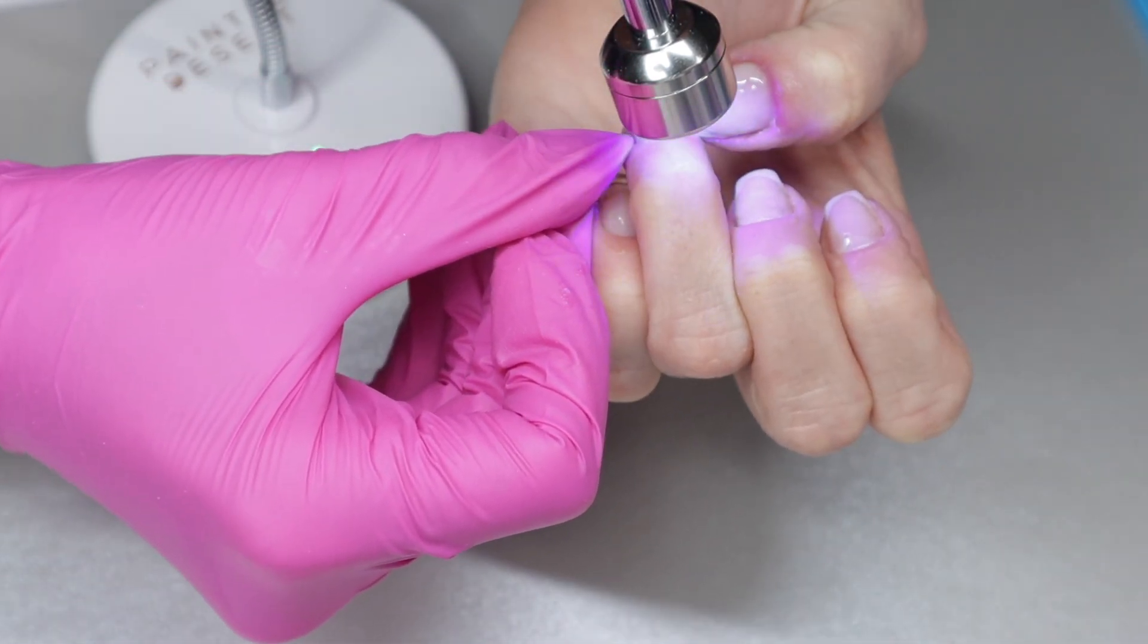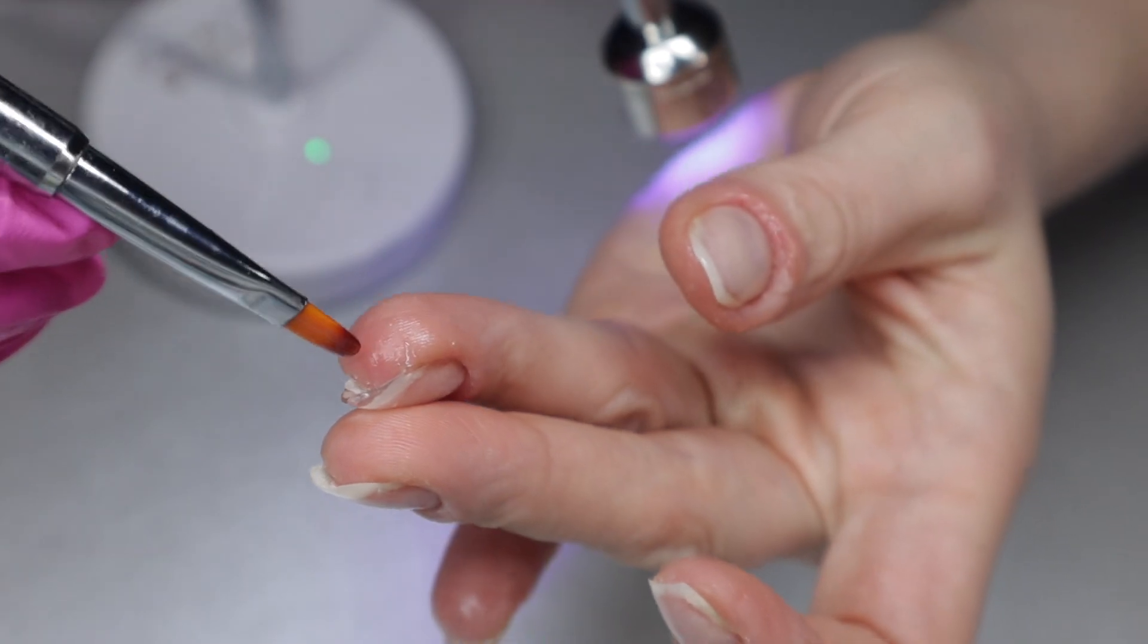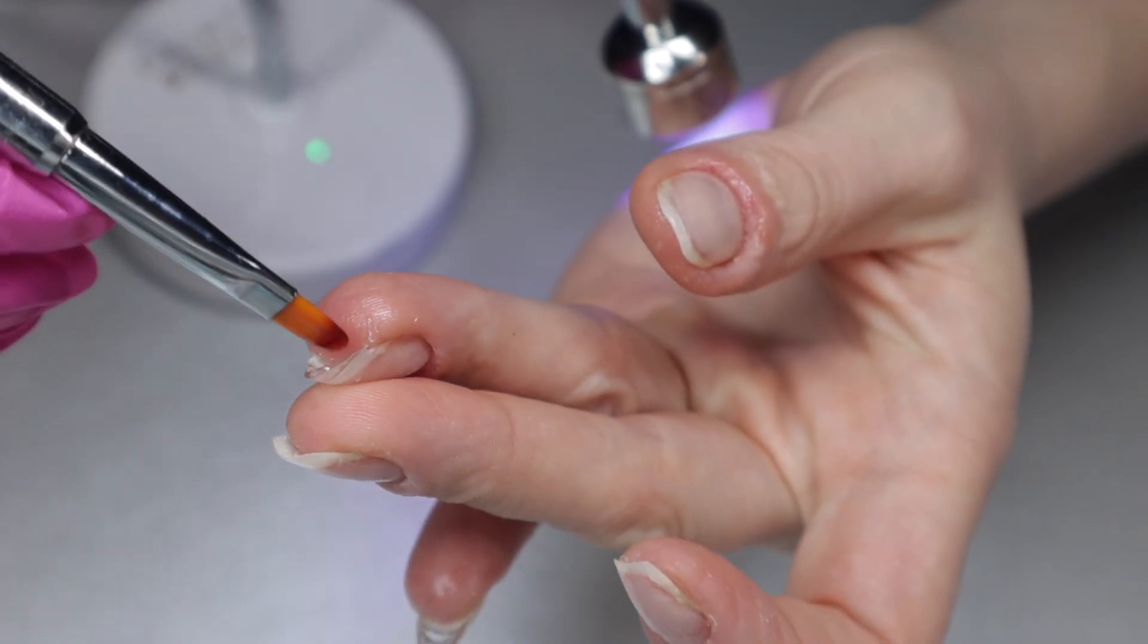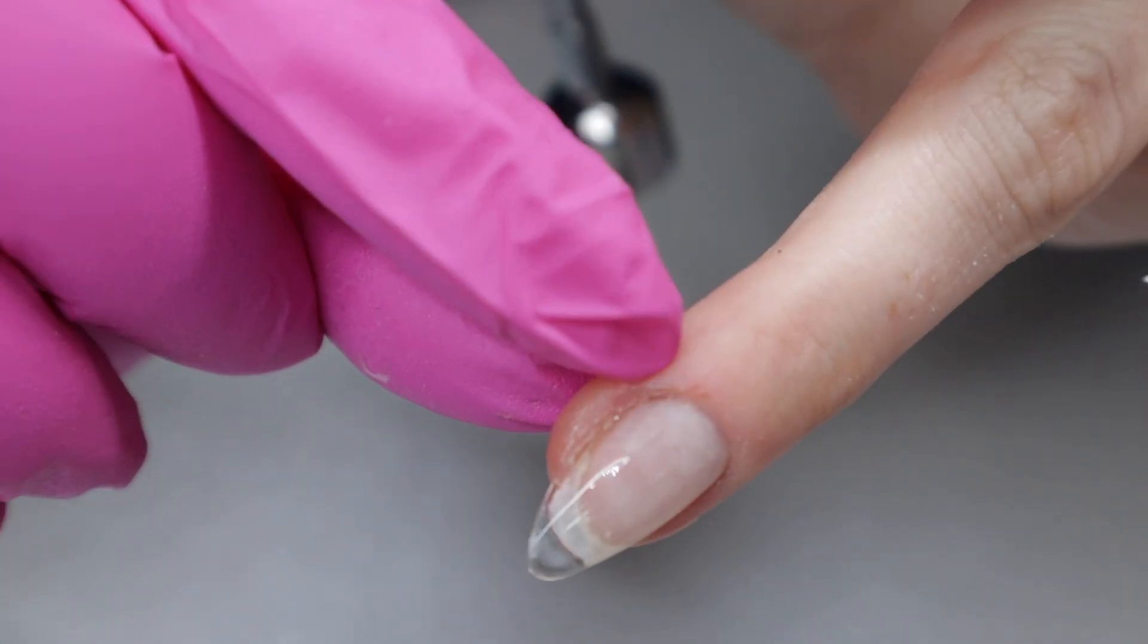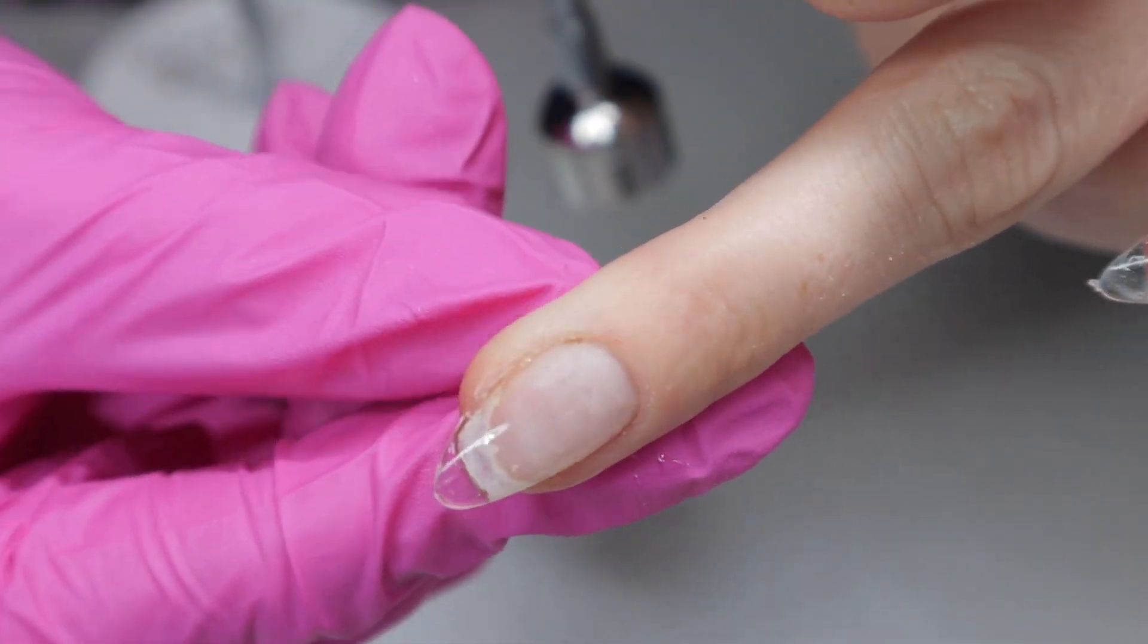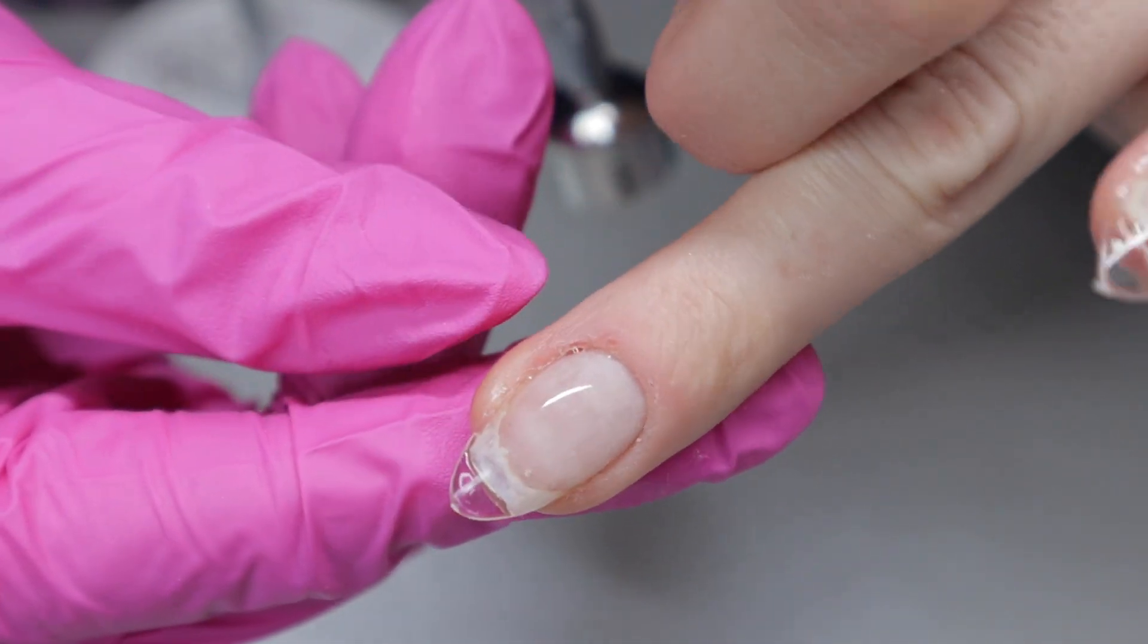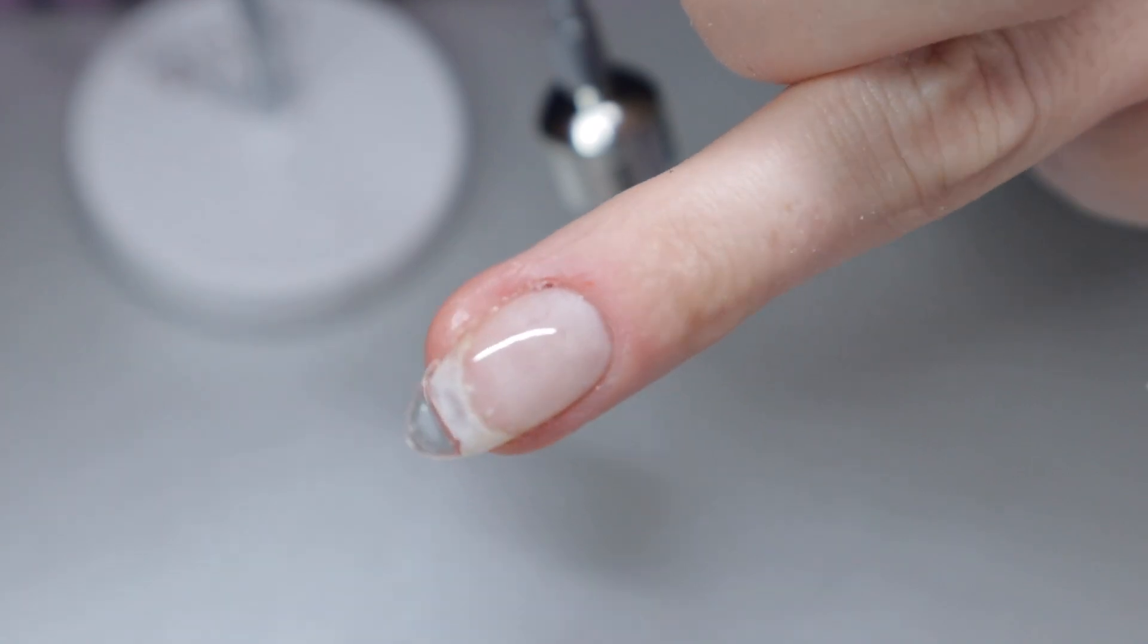You don't want the gel to float past the free edge. If you have any gel that floats past the free edge, take a gel brush like this and just smooth it out. I did get a little seepage here on the left side of my cuticle and I will be taking care of that in the next video where I talk about finishing touches and filing the cuticle area nice and flush.